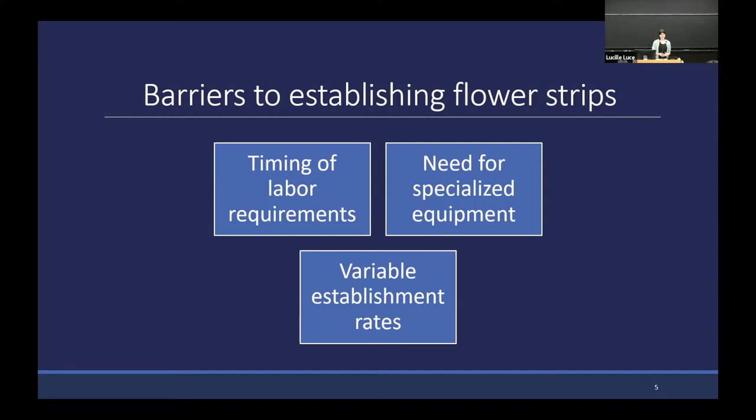Another issue is that in an ideal world these strips would probably be established with specialized equipment, something like a native seed drill. That's because lots of beneficial non-crop seeds are small or irregular or otherwise hard to plant. It's possible to plant flower strips in other ways — for instance, by just broadcasting them over the field area — but that sometimes leads to poor establishment, so there might be a bad return for the grower's time and money.